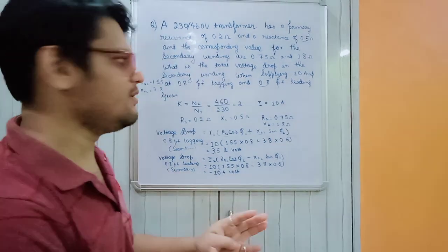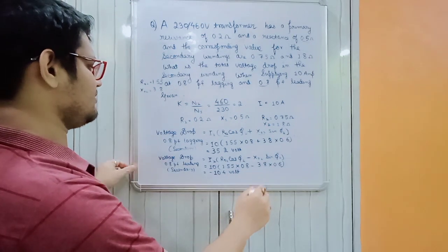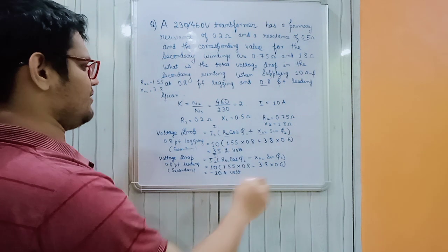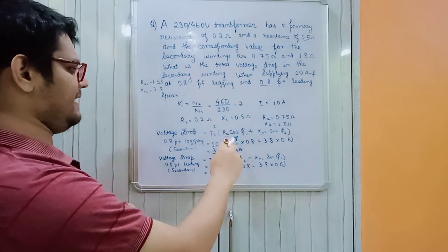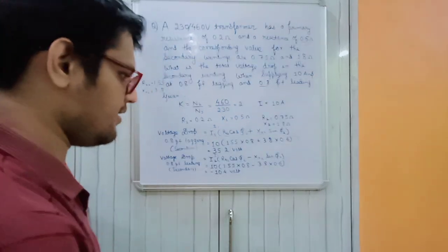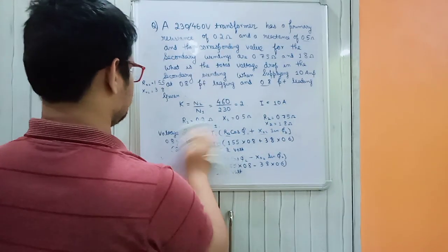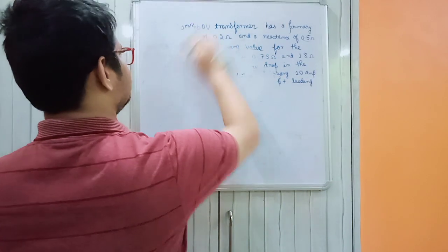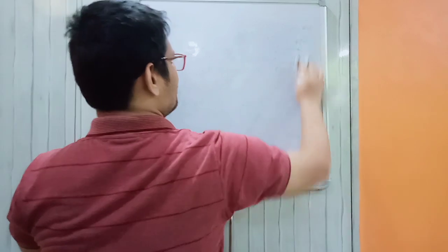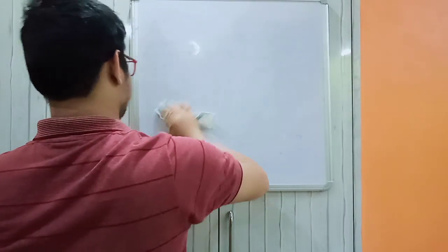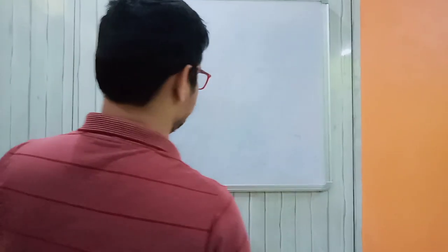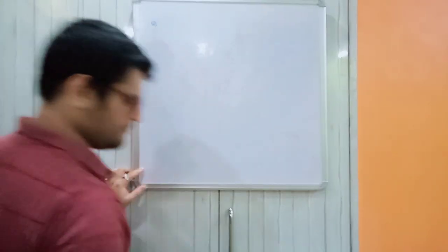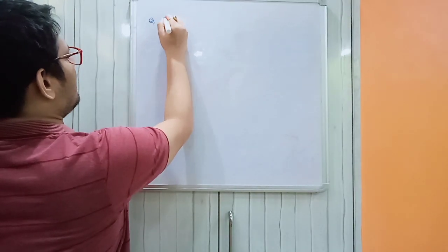I hope you have understood how to calculate the voltage drop in the secondary winding. For the primary case, we use I1 with primary resistance and reactance. Now I'll move to the next question, which is important for the semester as well as competition exams. It involves a single-phase 50 Hz transformer.